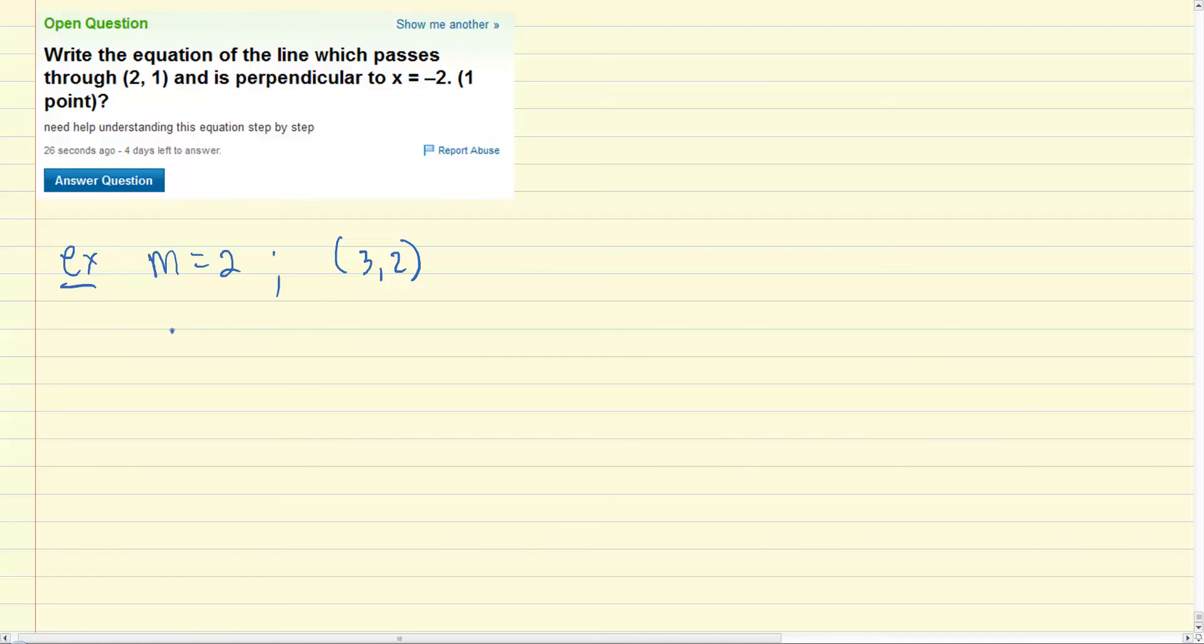there's a couple ways we could do it but the most straightforward way is to start off with slope intercept form, y equals mx plus b. Let's insert the m equals 2 into the m, and then this is your x and y over here.